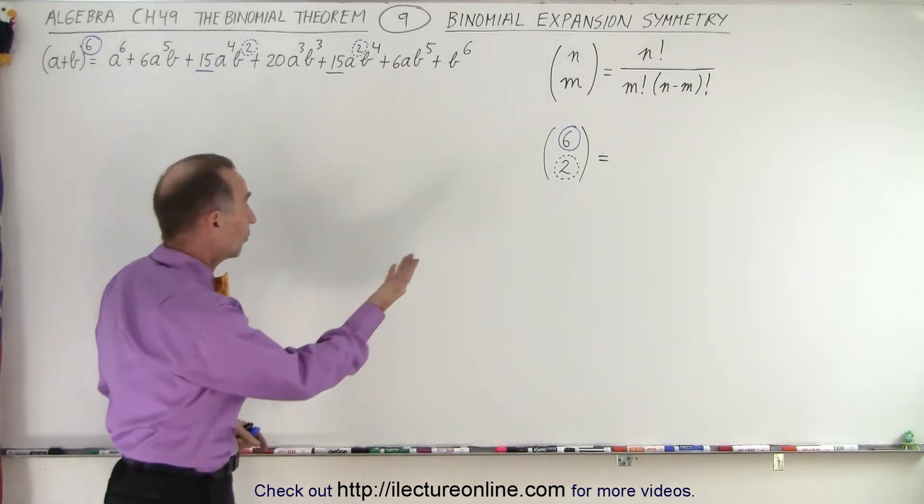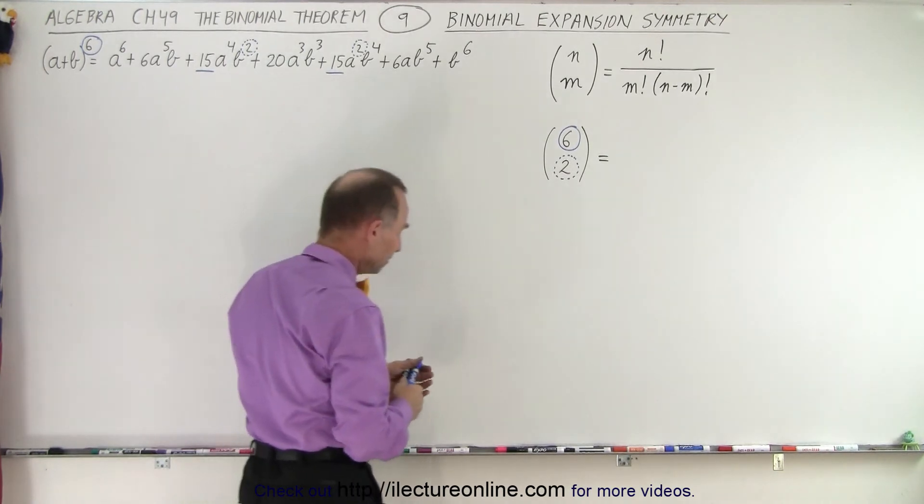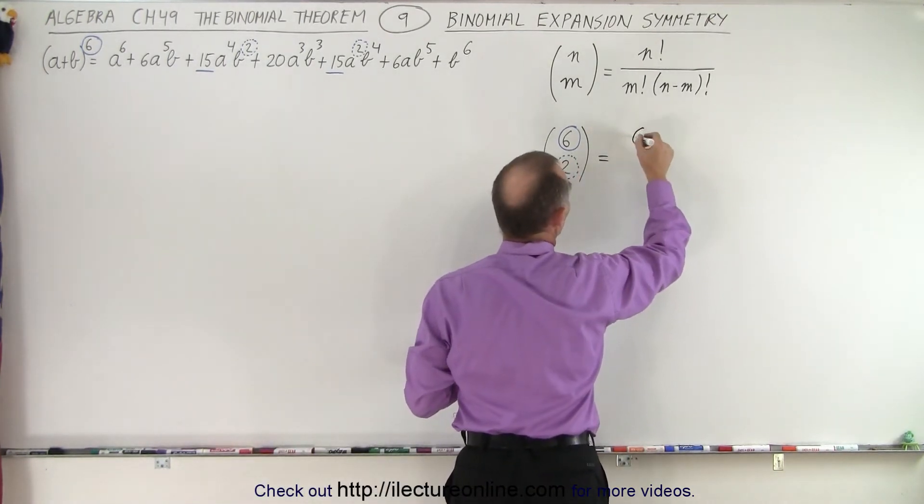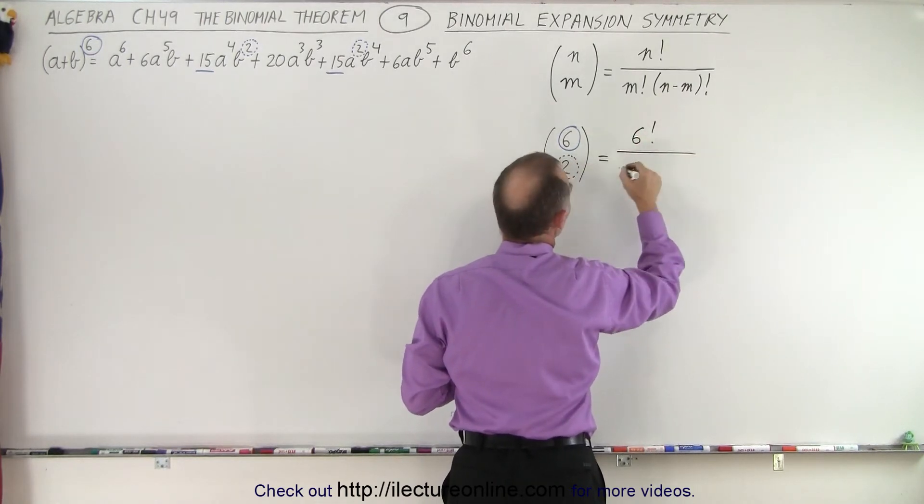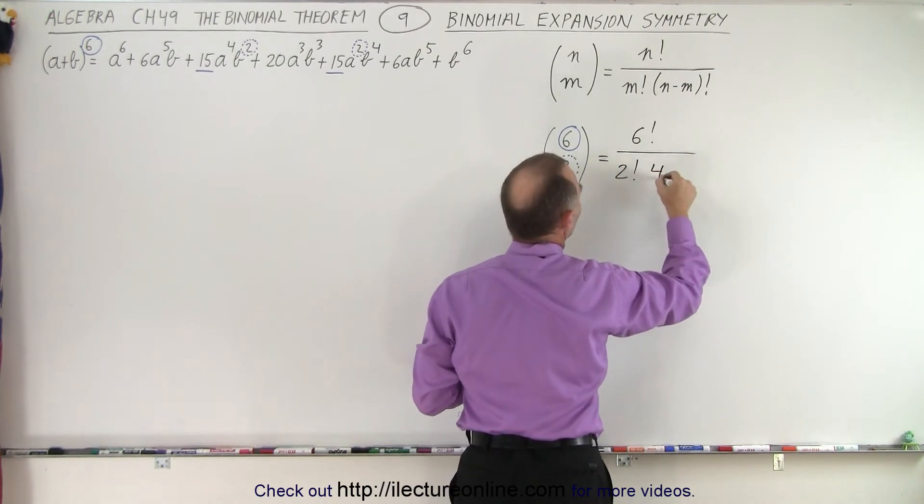So let's go ahead and work it out. And certainly, the result of this should equal the number 15. So in the numerator, we get 6 factorial. So this is 6 factorial divided by 2 factorial times 6 minus 2, which is 4 factorial.